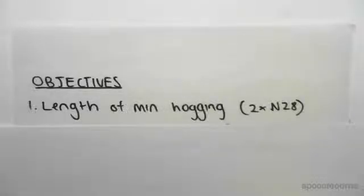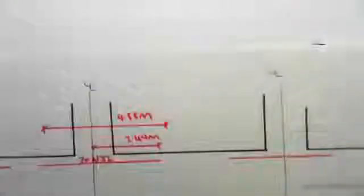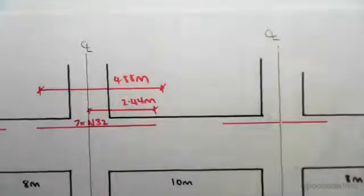Hey guys, the objective of this video is to find the length of the minimum hogging bars. In the previous video we found the length of the maximum hogging bars. Now we're finding the length of the minimum hogging bars. It's quite simple; all we need to do is ensure that the minimum hogging bars are going between these two bars.